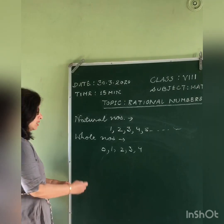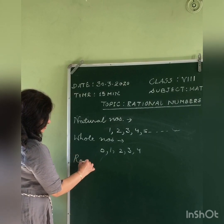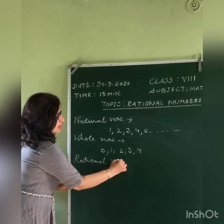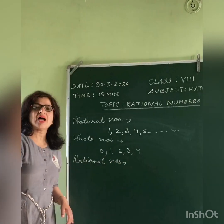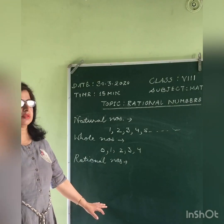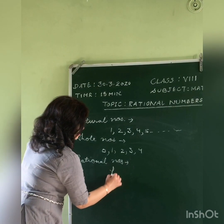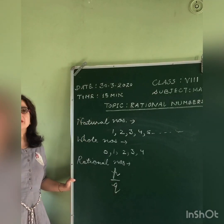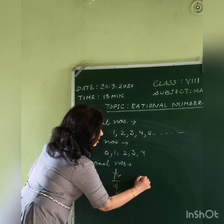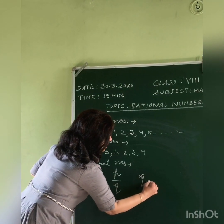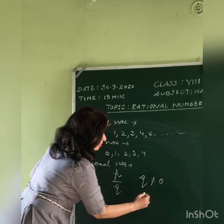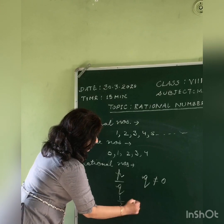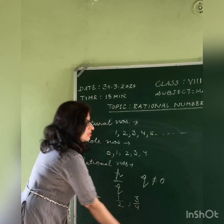What are rational numbers? Fractional numbers are called rational numbers. For example, p by q is a rational number where q is not equal to 0. So 1 by 2 is a rational number, and 3 by 4 is a rational number.